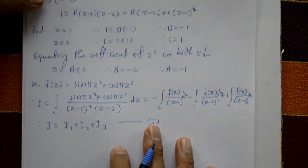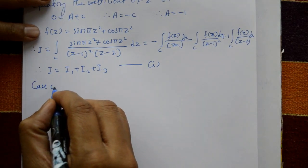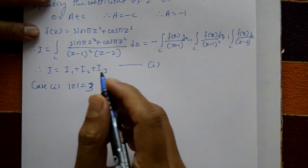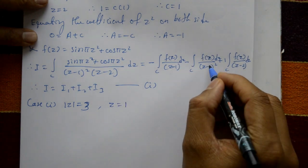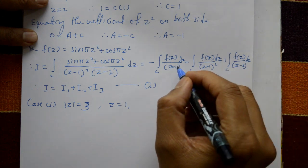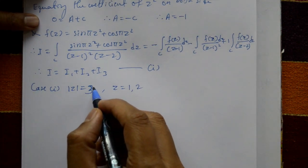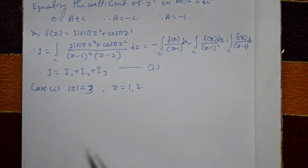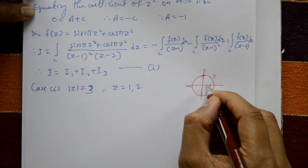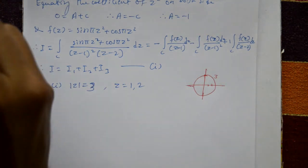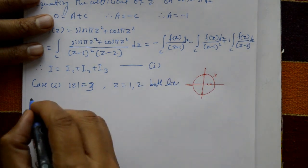Case 1: |z| = 3. The singular points are z = 1 and z = 2. Both 1 and 2 lie inside the circle of radius 3, so both poles are inside the contour C.